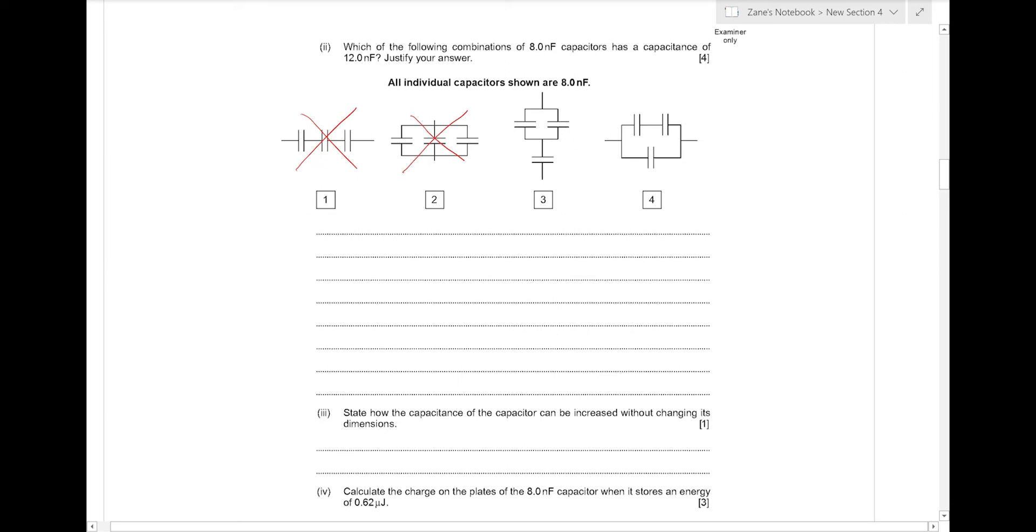With the arrangement for number 3, first of all do the two parallel capacitors. The 2 eights will give us 16. Then we'd have 1 over 16 plus 1 over 8, which is the same as 1 over 16 plus 2 over 16. That's 3 over 16. And if we flip that upside down again, we don't get the answer of 12.